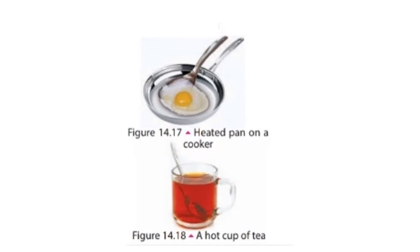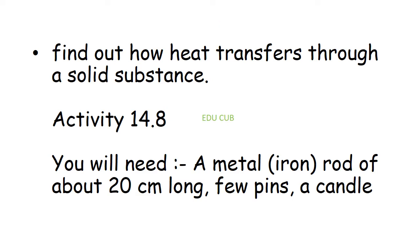A metal spoon in a cup of tea gets heated soon. The far end of the metal spoon also gets heated when it is put into the pan of a cooker. Here you can see that you have to do an activity to find out how heat transfers through a solid substance.